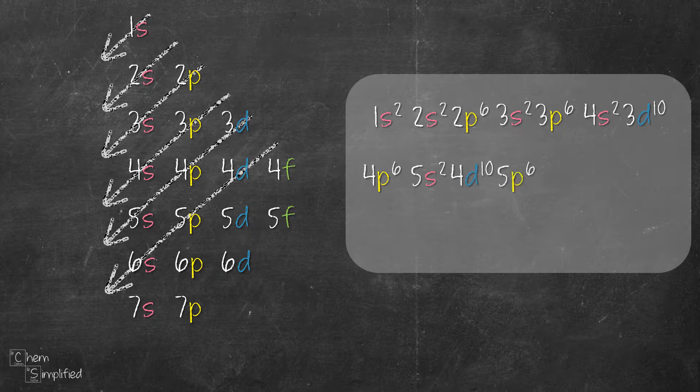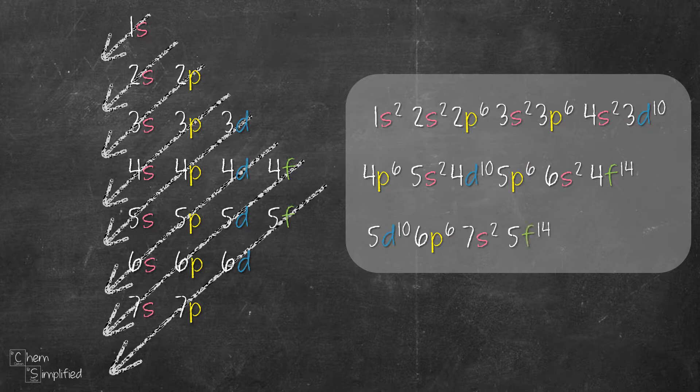At this moment, we only have 118 elements discovered in the periodic table. And so what we have written out here is the electron configuration for element number 118. As more elements are discovered, we'll get more orbitals and we can use the same trick and we can continue on to write the electron configuration. Pretty simple, right?